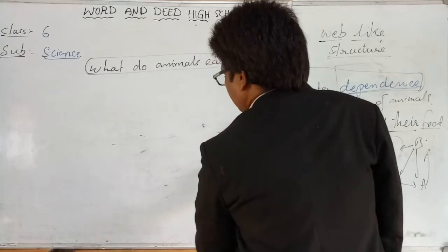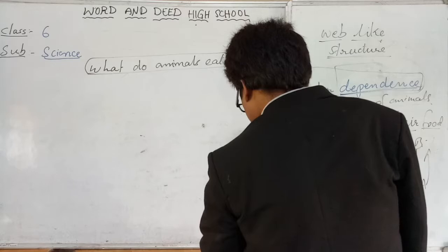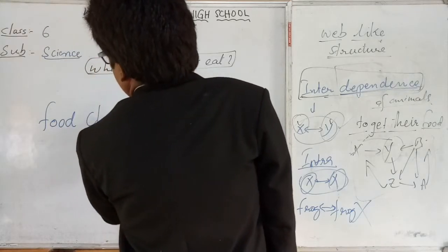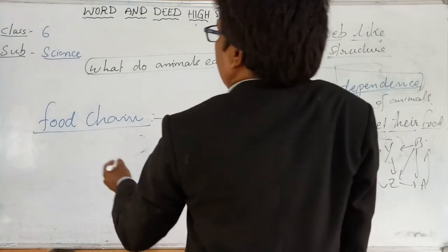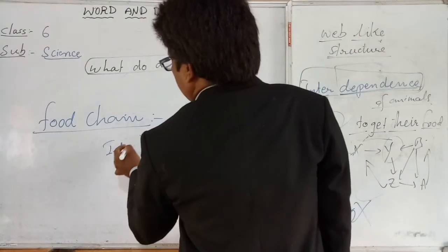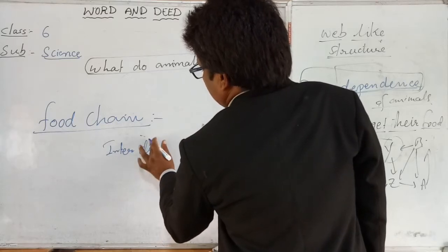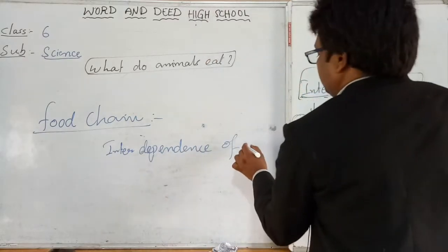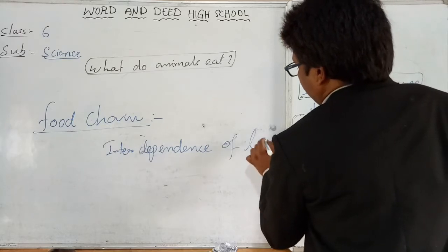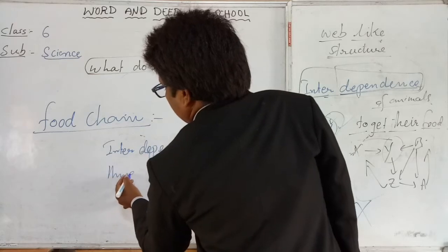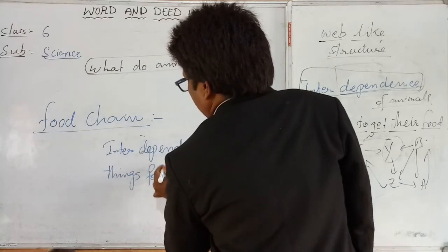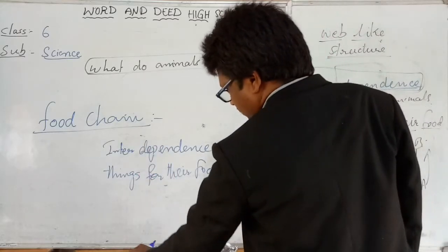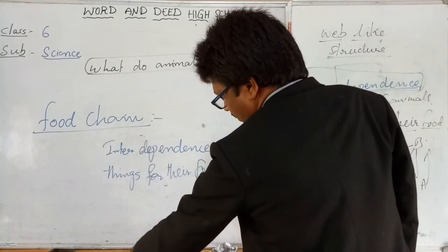The concept we have been talking about in this video is food chain. What is food chain? The interdependence of living things for their food is called food chain.